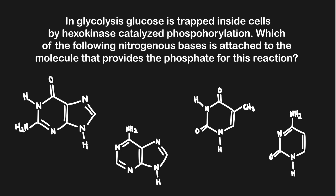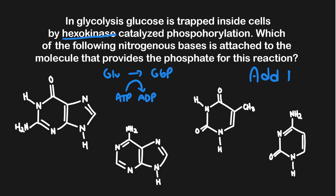Now let's look at how we can apply this on a question. The question asks: in glycolysis, glucose is trapped inside cells by hexokinase-catalyzed phosphorylation. Which nitrogenous base is attached to the molecule that provides the phosphate for this reaction? Hexokinase takes a glucose molecule and phosphorylates it into G6P, utilizing an ATP molecule and converting it into ADP. So we're looking for ATP, and the nitrogenous base in ATP is adenine. That means we need to look at the structures and use our 'ADNs' mnemonic.